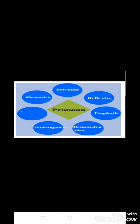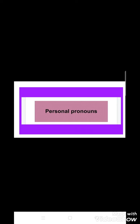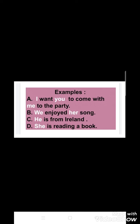Today, out of the six types of pronoun, we are going to make a detailed discussion on personal pronouns. In order to get the idea of this type, look at the examples mentioned here. Number one: I want you to come with me to the party. Number two: We enjoyed her song. Number three: He is from Ireland. And the last one: She is reading a book. Here you can clearly notice that I have highlighted a few words — they are I, you, me, we, her, she, and he.